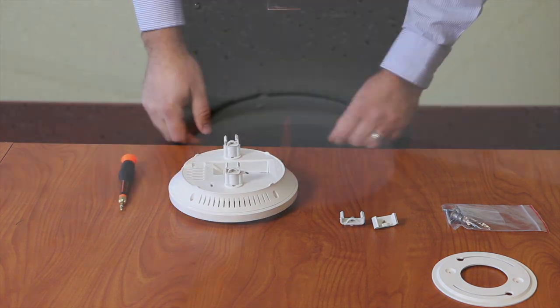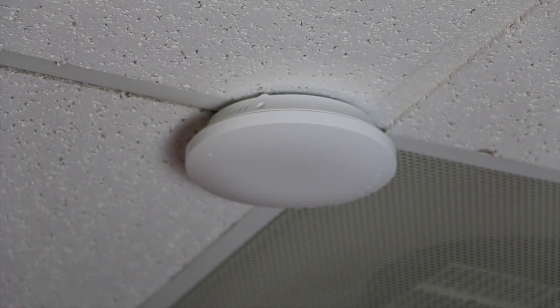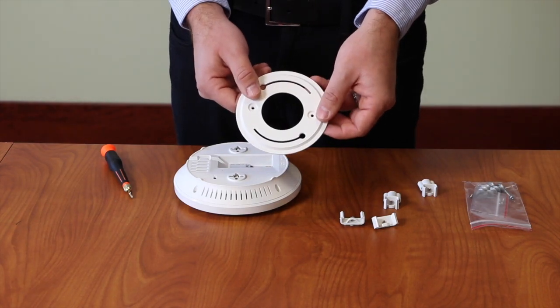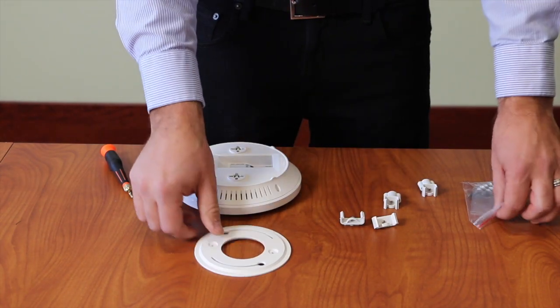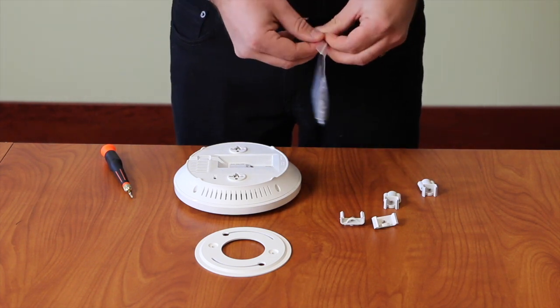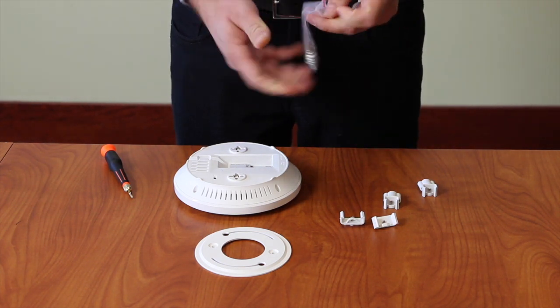Now you can see that's ready to mount. The other option to mount your access point is to use the included solid wall or ceiling mount. So we'll need this bag here. You can use the drywall screws or you can simply screw it into wood.